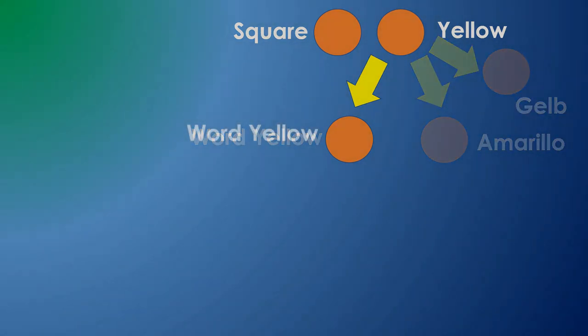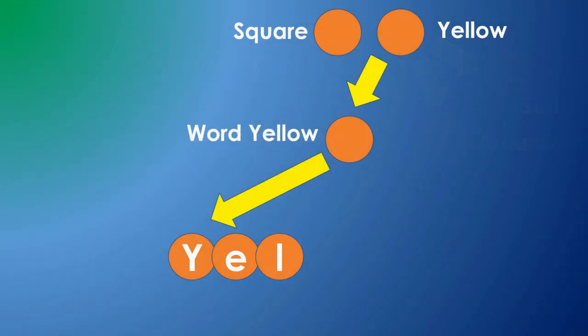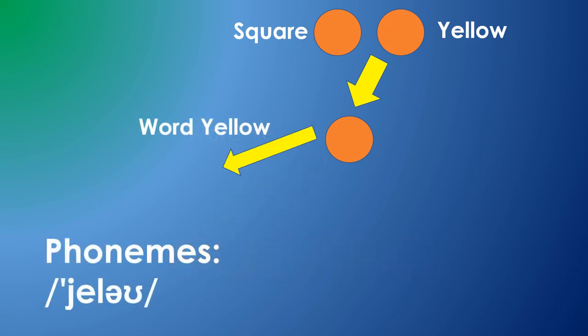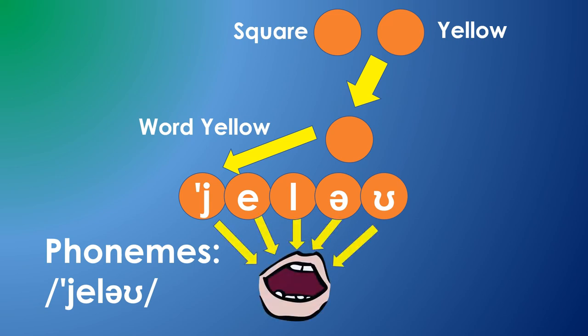Each word neuron could be connected to a series of neurons connected to individual letters so you could remember how to spell yellow. In order to speak the word, you need different information. The sounds or phonemes needed to pronounce the word. Each of these neurons, for an individual phoneme, might in turn be connected to the muscles you need to use to actually speak the word.